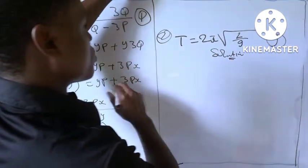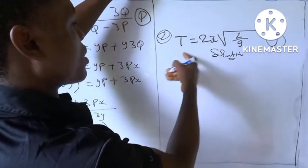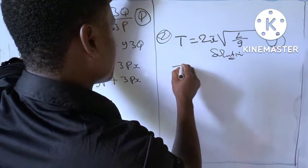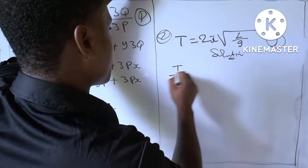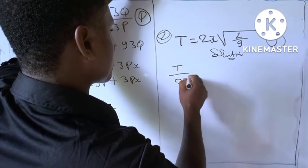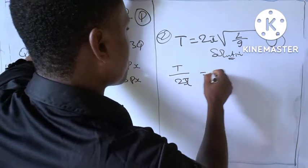The first thing you need to do is to bring this 2pi under t. Or you divide both sides by the 2pi. Divide both sides by the 2pi.